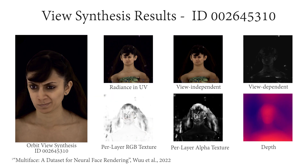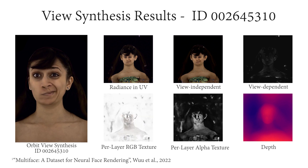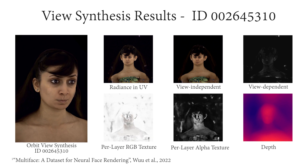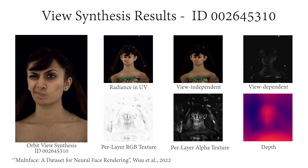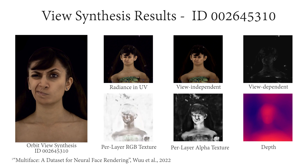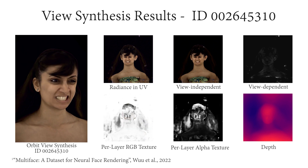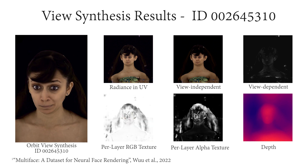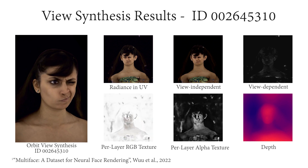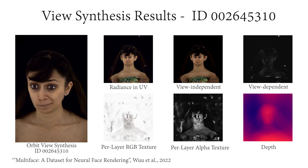We show view synthesis results on a subject from the multi-phase dataset. Our method achieves high-quality free-view renders of the subject's facial performance. We also visualize the radiance in the UV space, decomposed into the view-dependent and independent components, as well as the RGB and alpha textures for each of the 12 layers for a static frame, along with the expected depth value of the scene from our volumetric representation.